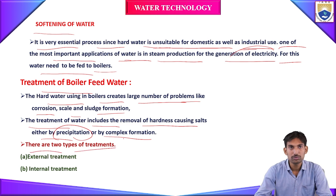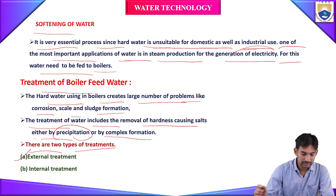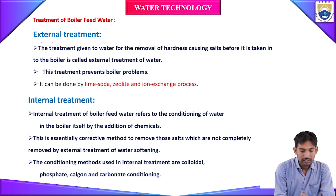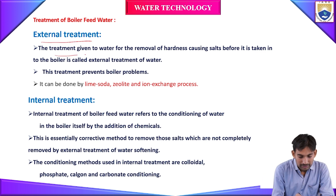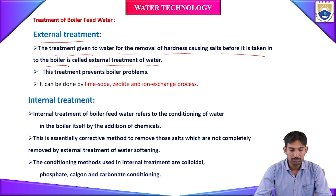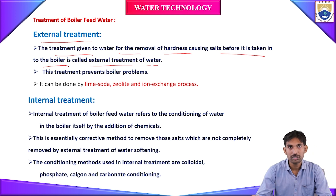There are two types of treatments present for boiler feed water: external treatment and internal treatment. External treatment is the treatment given to water for the removal of hardness-causing salts before it is taken into the boiler. Before water is taken into the boilers, we soften the water — that process is called external treatment of water.